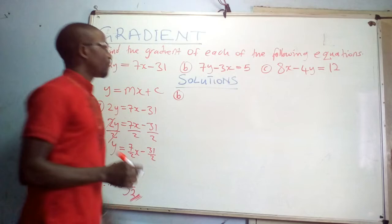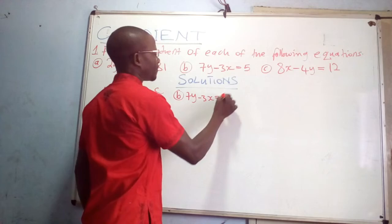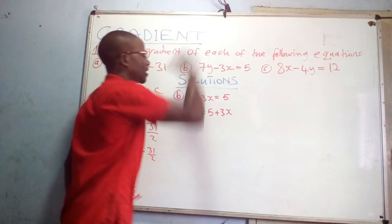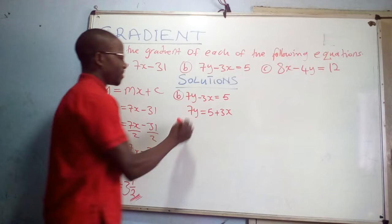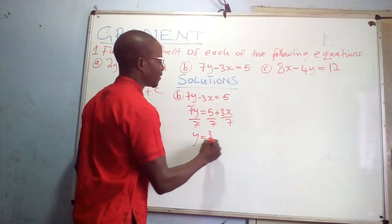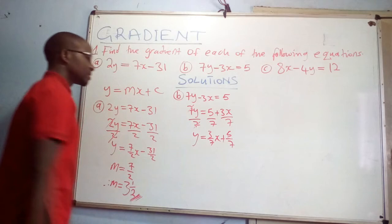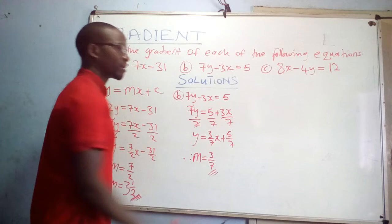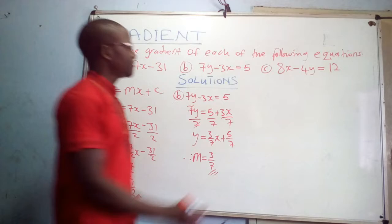Moving to equation B: 7y - 3x = 5. We express this in the form y = mx + c. We rearrange to get 7y = 5 + 3x, then divide throughout by 7 to get y = (3/7)x + 5/7. The coefficient of x is the gradient, therefore m = 3/7.